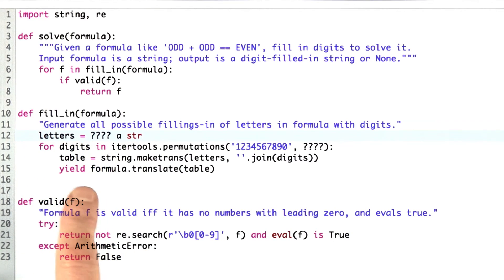So in other words, fill-in is a generator function, not a function that returns a list of results. Why did I do it that way? Well, because you might get lucky. It might be that the very first formula you try, or one of the few first formulas you try, is the correct one.